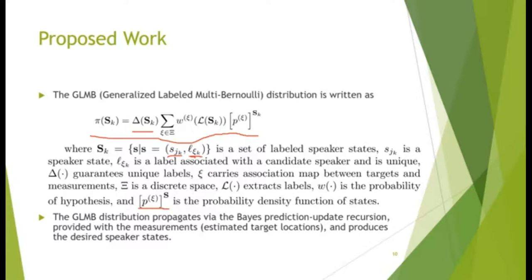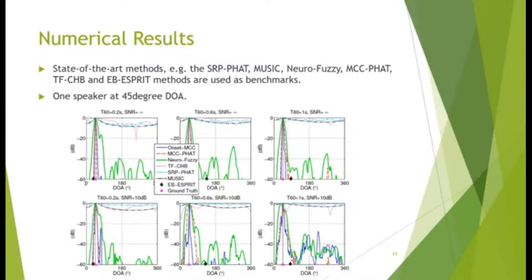Here are some numerical results. State-of-the-art methods, for example the SRP-FET, MUSIC, NeuroFuzzy, MCC-FET, TF-CSB, and EB-ESPRIT methods are used as benchmarks. This figure shows the case when there's only one speaker at 45-degree DOA. The uniform circular array is used. You can see that at low reverb and high SNR, all methods work well.